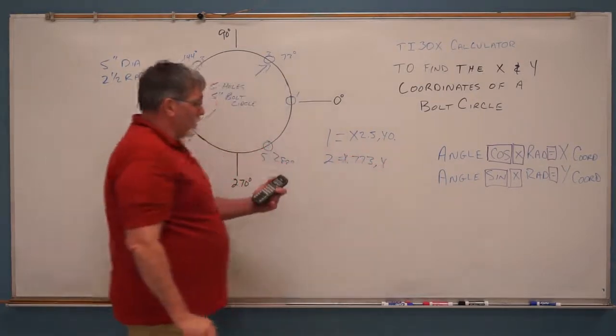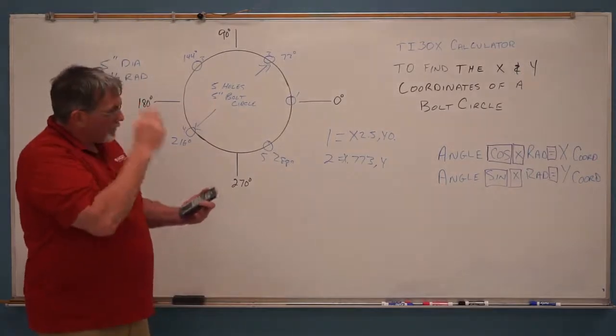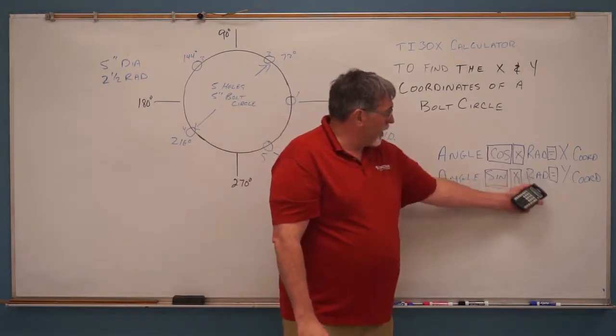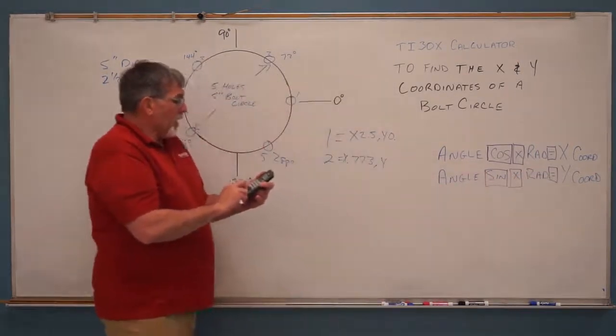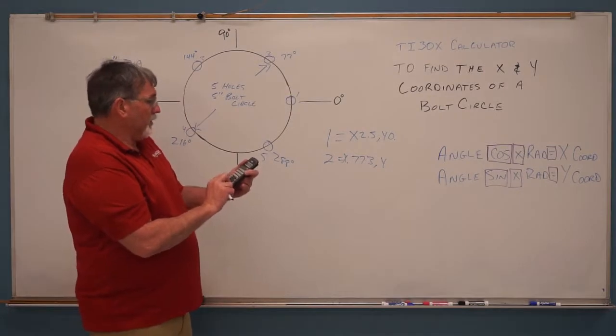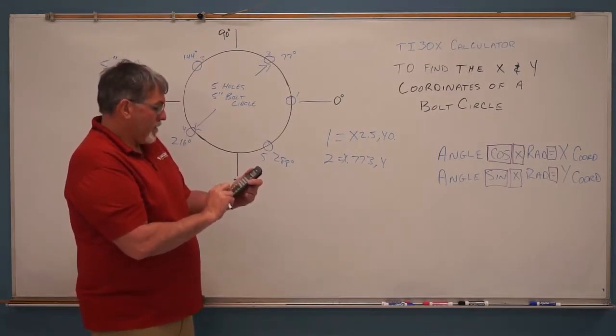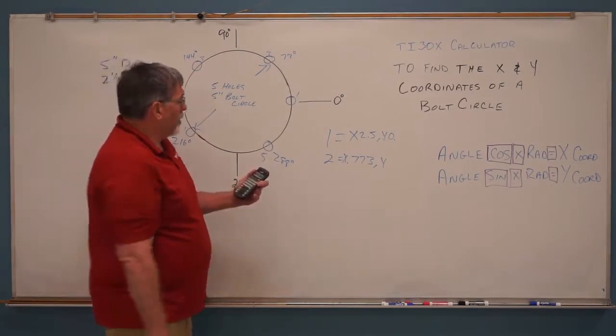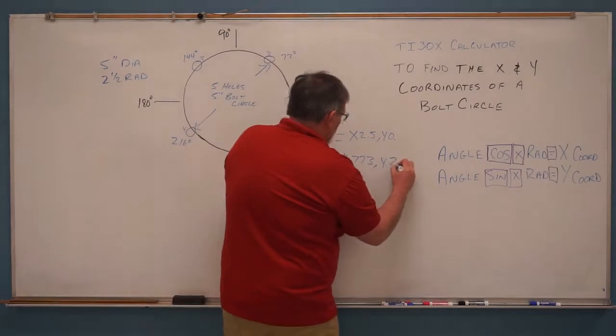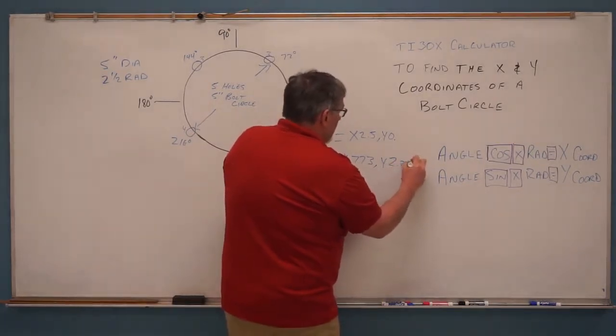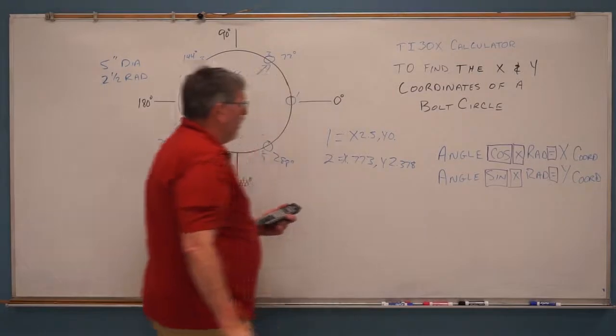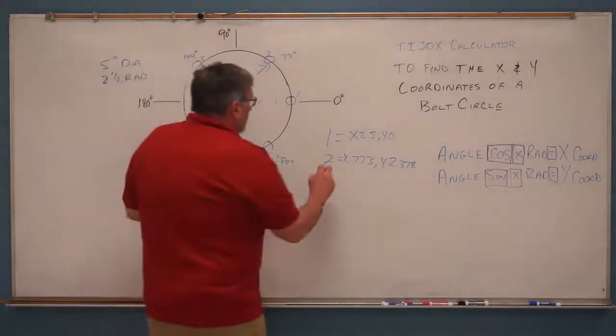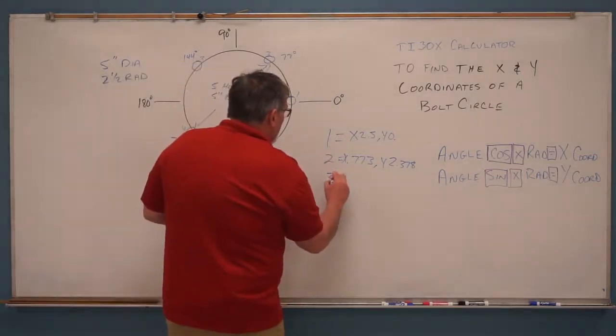So now we need to know our y-coordinate. Our y-coordinate is right here. It's angle sine times the radius equals the y-coordinate. So our angle is still 72 degrees, sine times the radius of 2.5 equals 2.378 inches in y. So now we have our x and y for the first point.